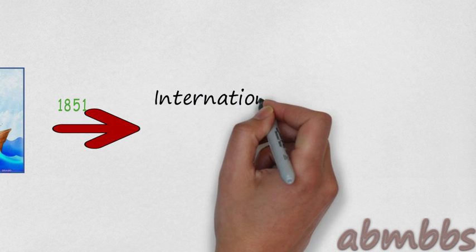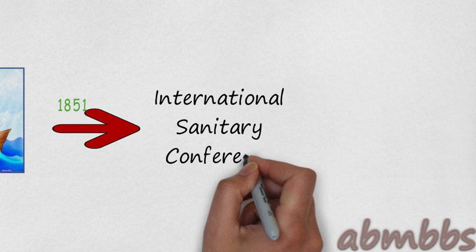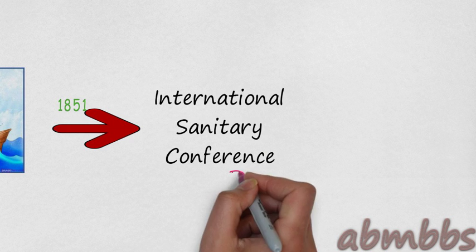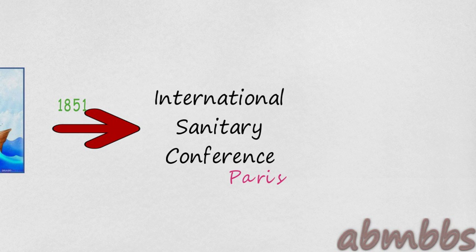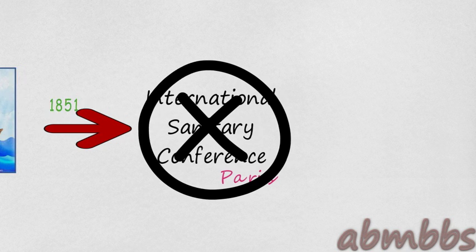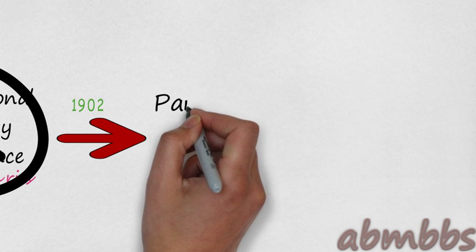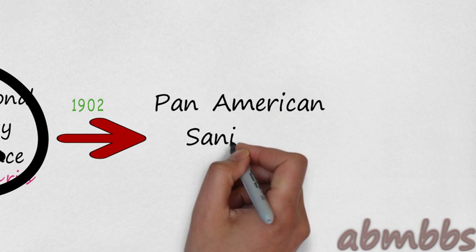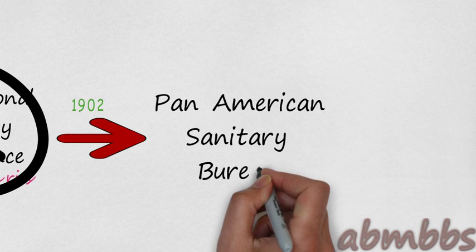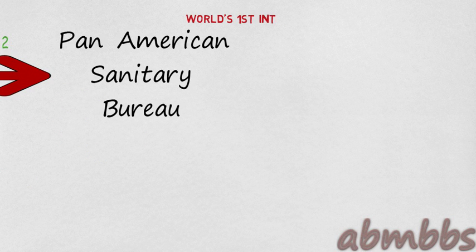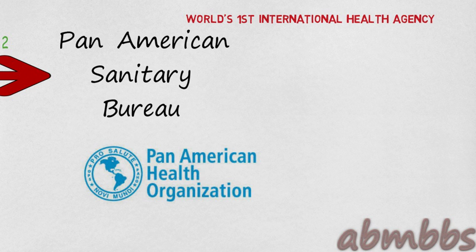So in 1851, an International Sanitary Conference was convened at Paris to bring about some order and uniformity, but it failed. In 1902, a Pan American Sanitary Bureau was set up to bring uniformity in the quarantine measures in the American states. It was the world's first international health agency.